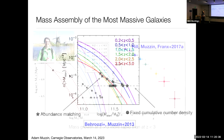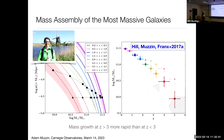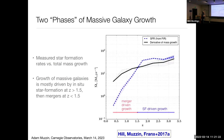A student working with myself and Marijn Franx in Leiden — Allison Hill — applied this to look at the progenitors of M87. Here she is tracing the evolution of a galaxy like M87 through the integrated mass functions. This is the growth history of M87 from basically redshift zero out to redshift 5. What you see is pretty rapid growth at early times — from redshift 5.5 down to 3, it grows by almost a factor of 30. Then it slows down a little bit as you go to lower redshift.